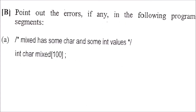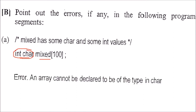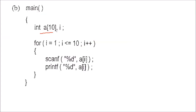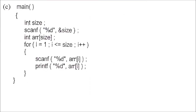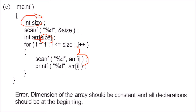Point out the errors in the following program segment. This is int and char mixed — you cannot have integer and character together for an array; it can be either integer or character. We have array A[10] and you are trying to go from 1 to 10, so you are actually jumping the bounds. The subscript always starts with 0 and goes up to n-1, which is 9 here. Also, the dimension of the array cannot be a variable — it should be a constant and all declarations should be at the beginning.